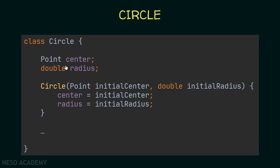Inside the Circle class we have two attributes, and now we have a method called Circle with no return type. It takes a Point initialCenter and a double initialRadius. Inside this method we assign the center attribute to initialCenter and the radius attribute to initialRadius. This is our constructor and we use it to initialize the attribute values.